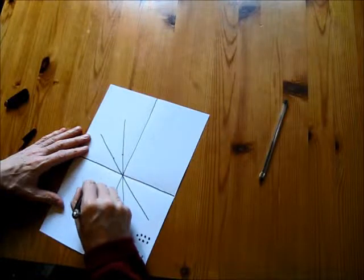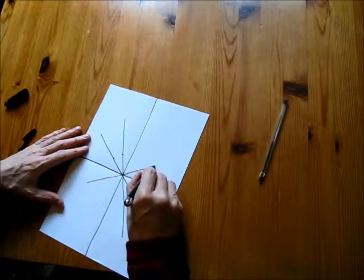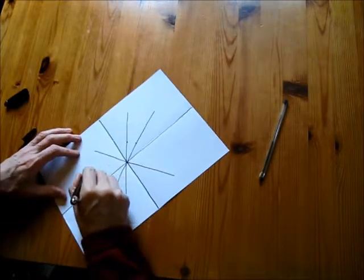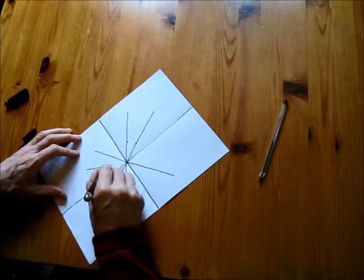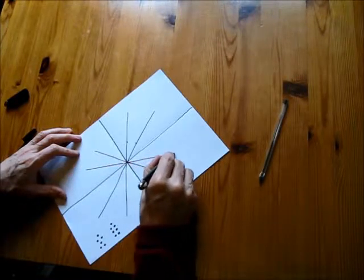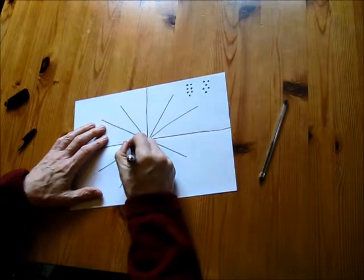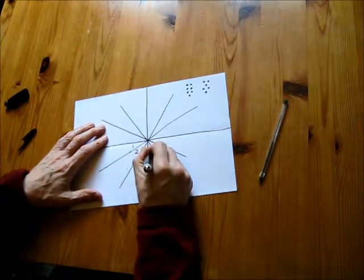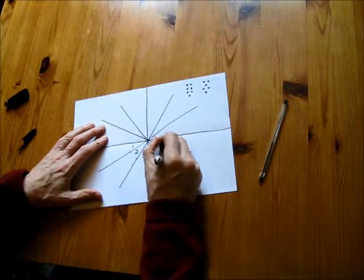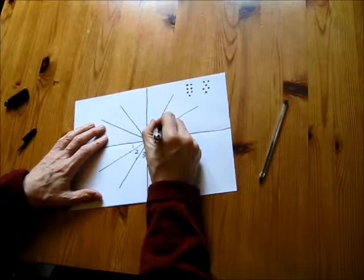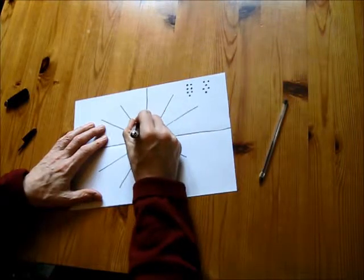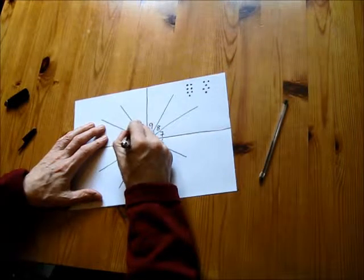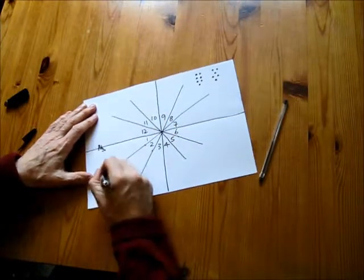Drawing these in now so they're going through the center. Just write these in for the sake of clarity. Sun's in sidereal Scorpio today.